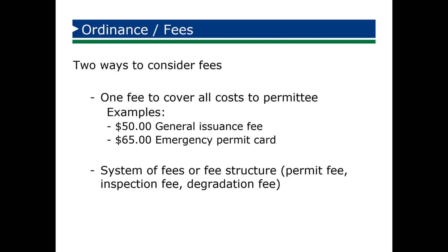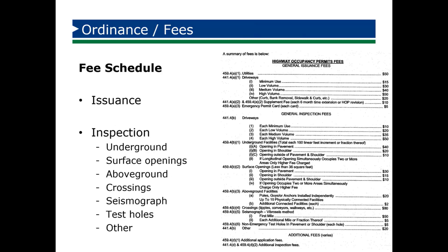Talking about fees — this is always one of the bigger topics. There are really two ways to consider implementing fees for your program. The first is something very simple: a one fee to cover all costs. Typically this is the application fee. In some organizations they say this is all we're going to charge — a $50 general issuance fee — and that's going to let us know where the work is taking place and give us the ability to issue emergency permit cards. The second way is through a system of fees or a fee structure that has a permit fee, an inspection fee, and a degradation fee. It's a little bit more complicated and requires a little more management and enforcement of the program.